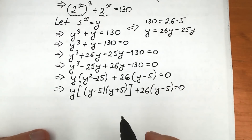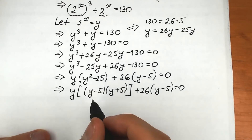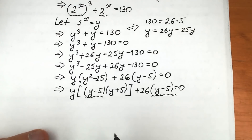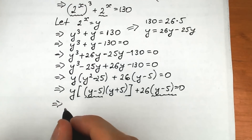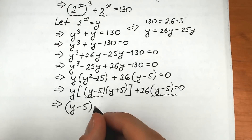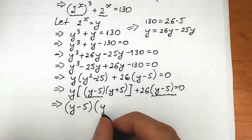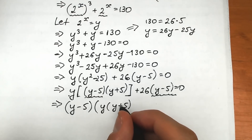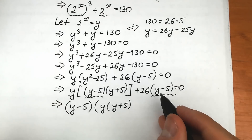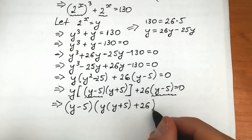So we have the sum of two expressions, and in each one we have (y minus 5). So we can easily factor out (y minus 5). So right here we have (y minus 5), and inside the parentheses we still have y times (y plus 5), so y times (y plus 5), plus 26. Because we factored out (y minus 5), we still have 26, so plus 26, which is equal to zero.